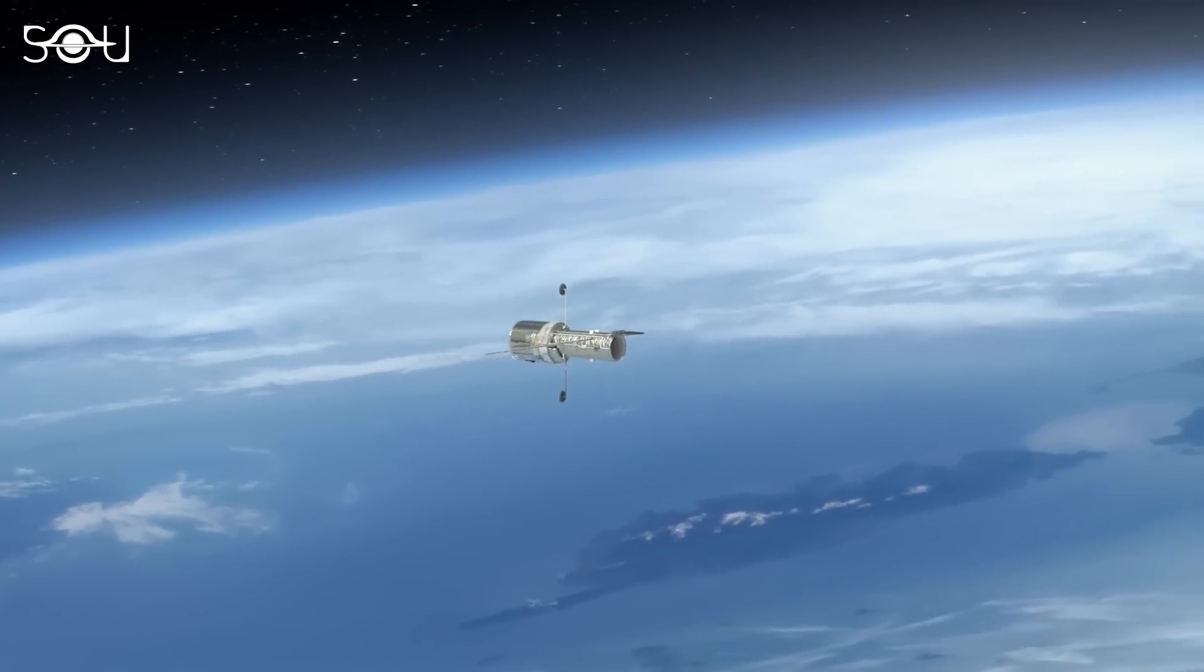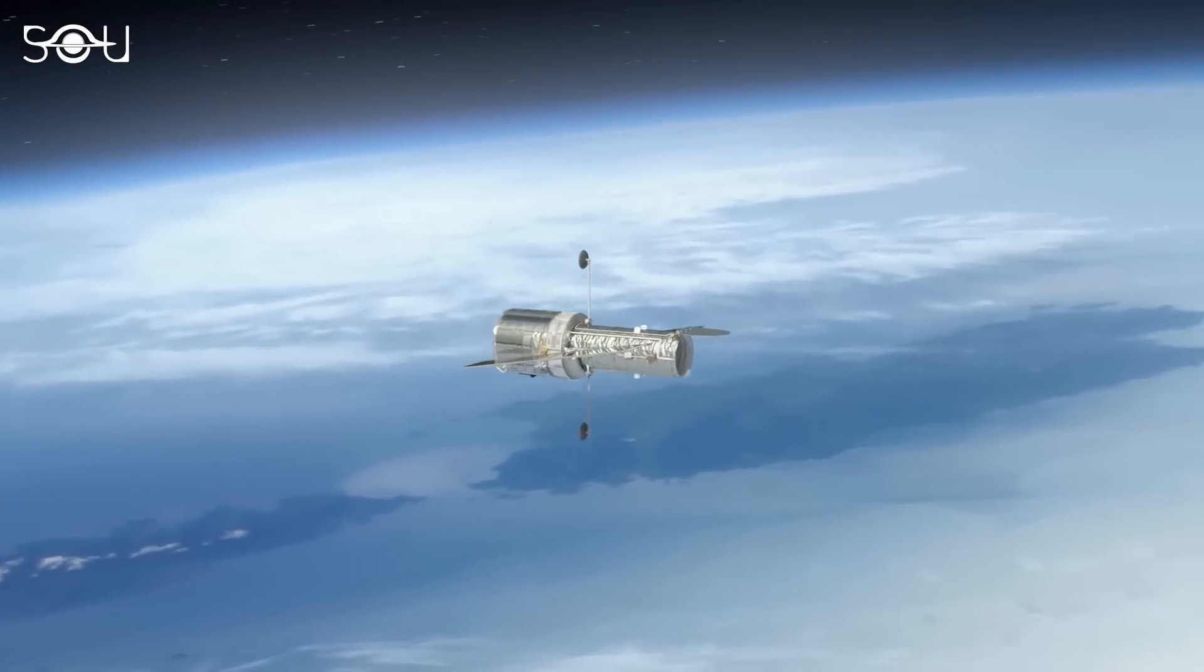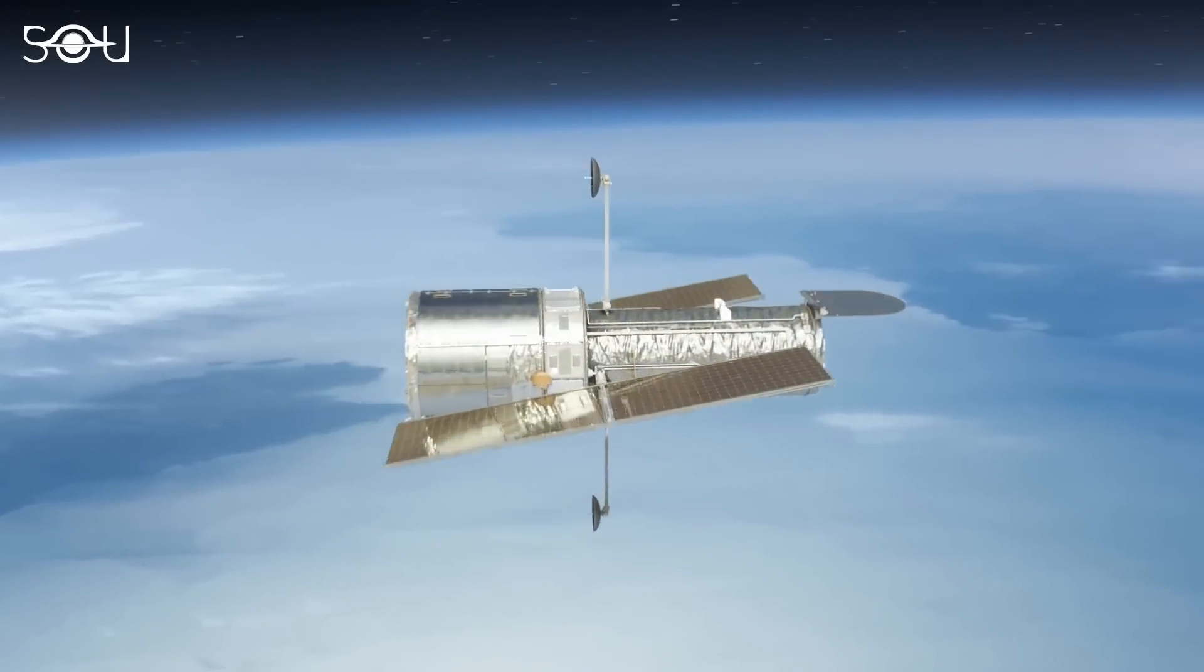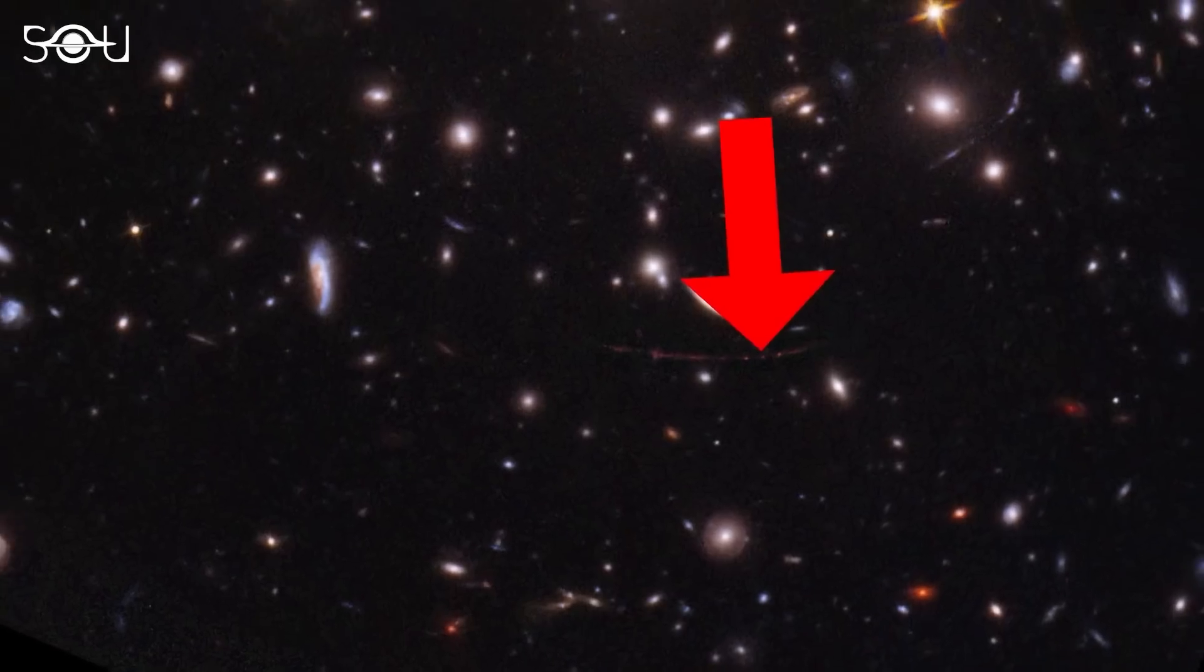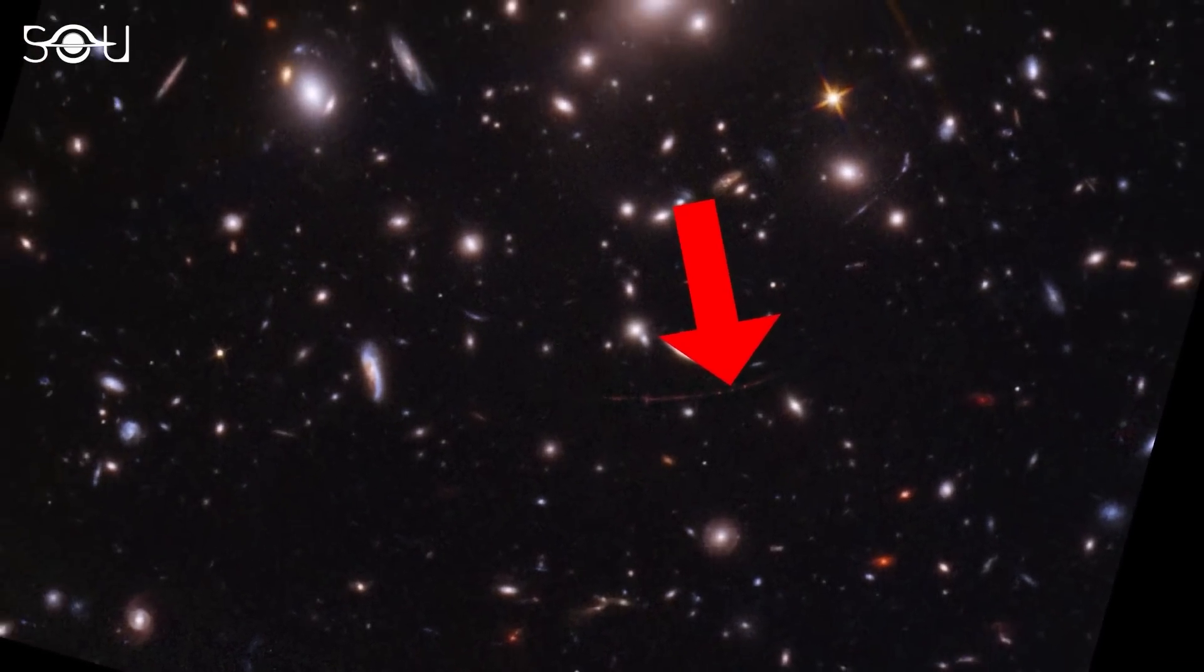Hubble's observations showed that the brightness of this object remained constant over three and a half years. Hence, astronomers concluded it's a gravitationally lensed bright star in Sunrise Arc.